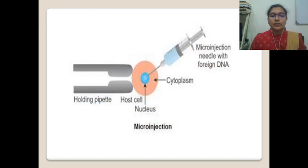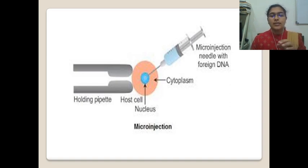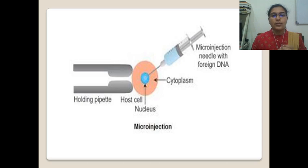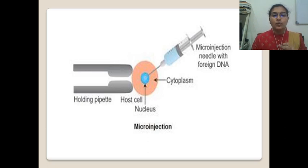Now let's see what is the mechanism of this method. In this technique, the whole process is carried out under a high-definition microscope. The delivery of DNA into the cell is done under the powerful microscope by using a glass micropipette of 0.5 micrometer diameter tip. The DNA is also drawn into a small microsyringe with the aid of a powerful microscope.